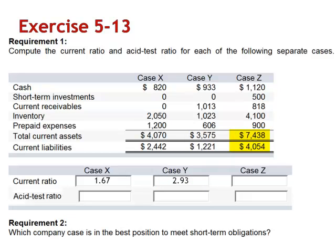And case Z: 7,438 divided by 4,054, giving a current ratio of 1.83. So using the current ratio, it looks like all three of these companies will be able to satisfy their current liabilities.